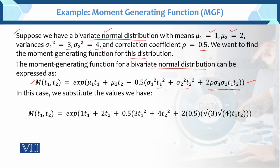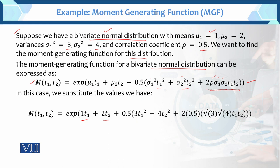Now we substitute the values. For this particular example: μ1 = 1, so we put 1·t1. For μ2·t2, μ2 = 2, so we get 2·t2. Then we enter the values of σ1², σ2², and ρ·σ1·σ2. σ1² = 3, σ2² = 4, and ρ = 0.5.